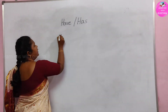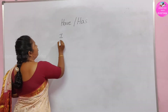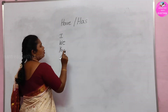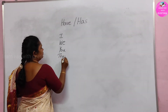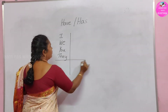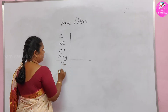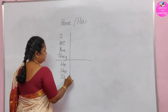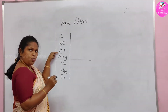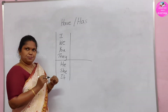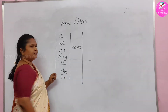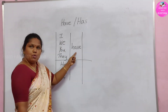See, I means 'nenu.' We means 'manamo.' You means 'meeru.' They means 'vallu.' This is one set. For I, we, you, and they — we use have. I have, we have, you have, they have.